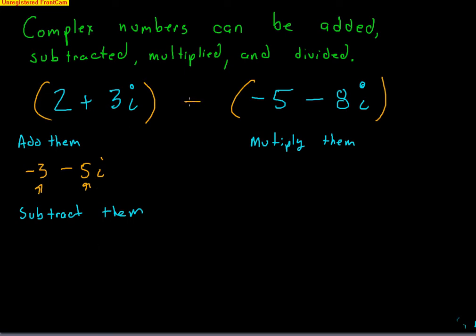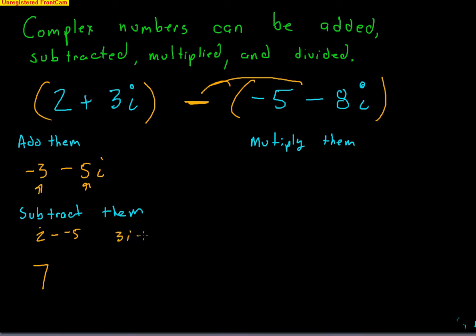For subtraction, be careful because the negative sign distributes to both terms. (2 + 3i) − (−5 − 8i): 2 − (−5) = 7 for the real part, and 3i − (−8i) = 3i + 8i = 11i for the imaginary part, giving 7 + 11i.